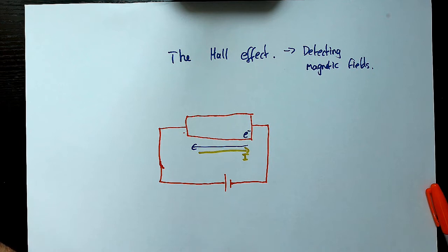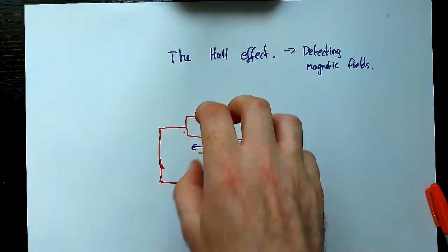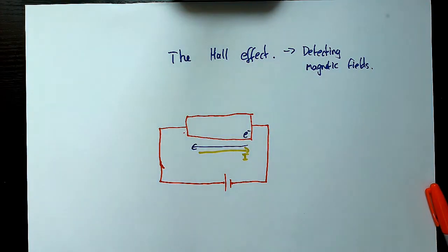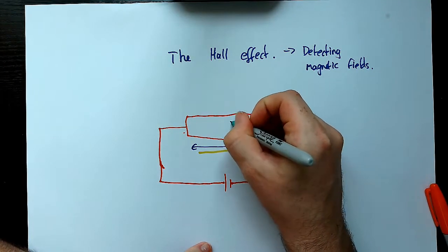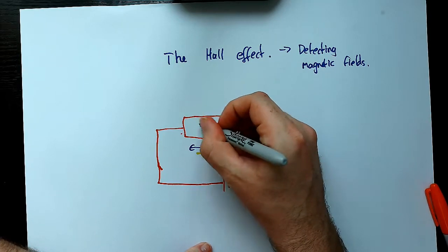As a result of this, we can actually say that we can observe... If we put a magnetic field into this, then we can... I'll just draw the magnetic field in. So say for example, we have a magnetic field going down into this conductor right here.